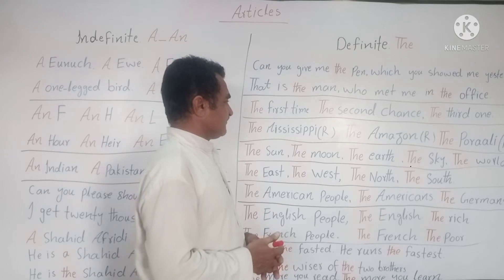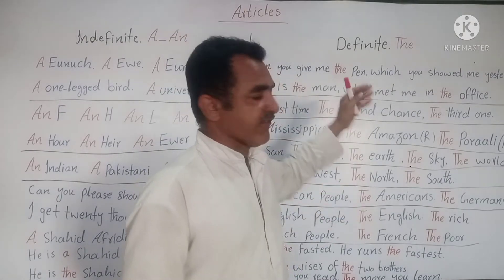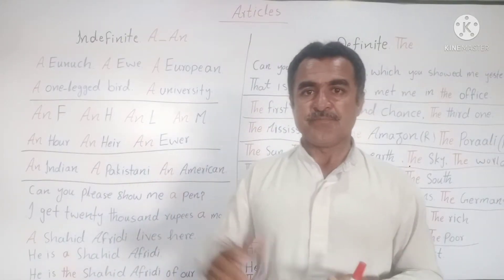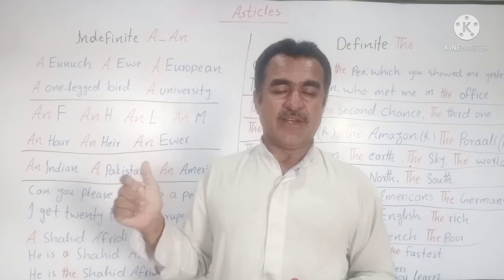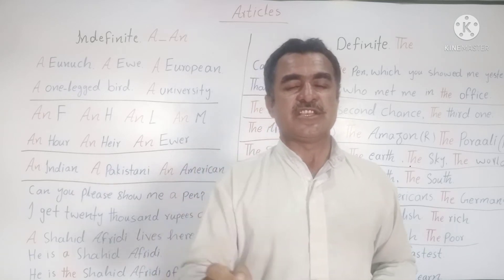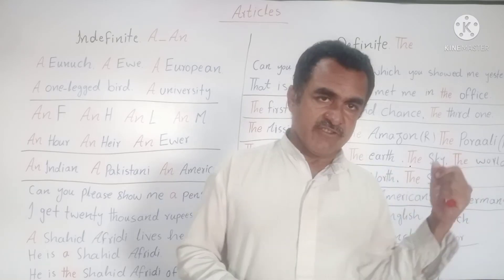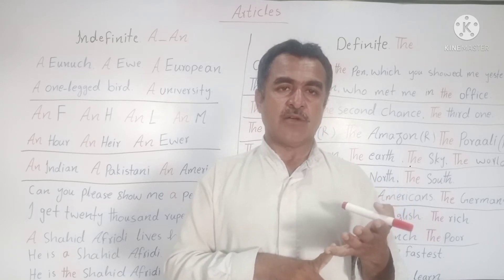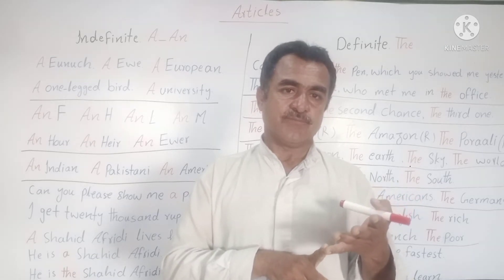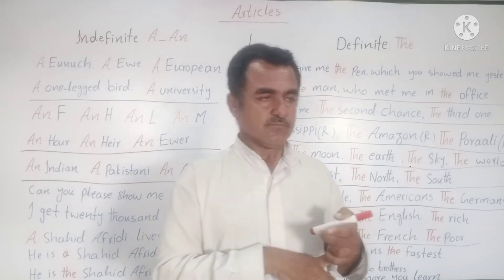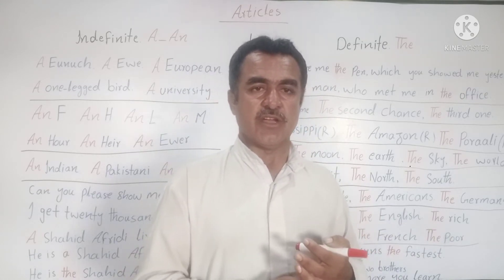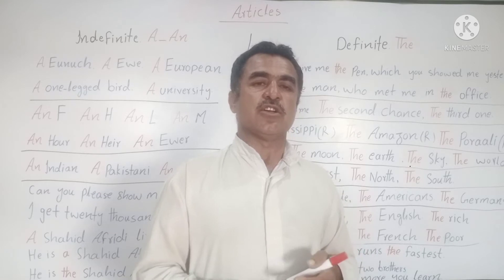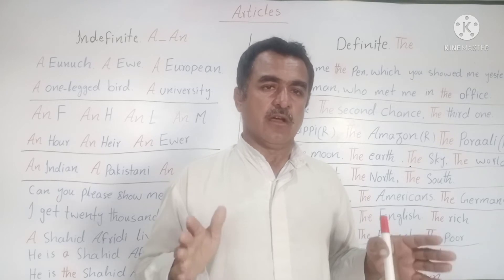These are not all uses, just some examples. The indefinite article 'a' or 'an' can only be used for singular countable nouns. But the definite article 'the' can be used with abstract nouns, common nouns, uncountable nouns, and plurals. With plural nouns we can use 'the', with uncountable nouns we can use 'the', with abstract nouns we can sometimes use 'the', and with common nouns we can use 'the'.